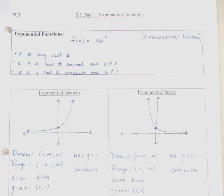Chapter 3 is Exponential and Logarithmic Functions. We will continue our discussion of functions with a focus on exponential functions and its inverse, the logarithmic function. You should have already read textbook pages 158 to the top of 161. On the front page of our notes is a summary of important information about exponential functions. An exponential function is called a transcendental function, written as f of x equals a times b to the x power, where the variable is within the power.